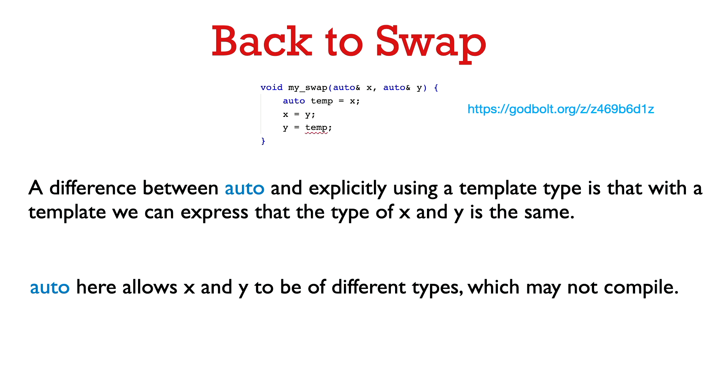So in this case, the compiler is going to deduce the type of X and deduce the type of Y. But those types could be different. So there's no enforcement that the type of X is the same as the type of Y. But in a swap function, we really want that to be the case. Otherwise, we might get compiler errors if we're trying to assign one type to a different type. So I think in this case, it would really be better to explicitly use the template rather than just using auto.